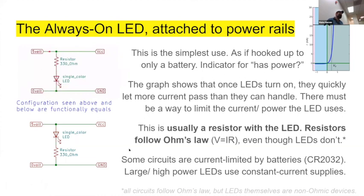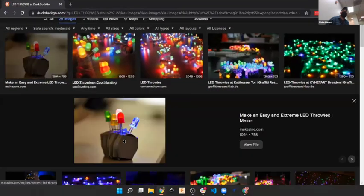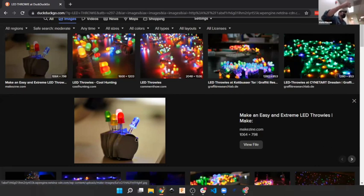I was chatting with somebody who talked about throwies. Let me pull up what a throwie is. LED throwies are basically a CR2032 battery with an LED taped onto both sides — that's it. As long as you don't have too much current passing through, LEDs are going to last. If you just wrap the legs of an LED around the sides of a CR2032 battery, it'll run that LED for about a month, because the battery doesn't give out a lot of current and can't overload the LED.